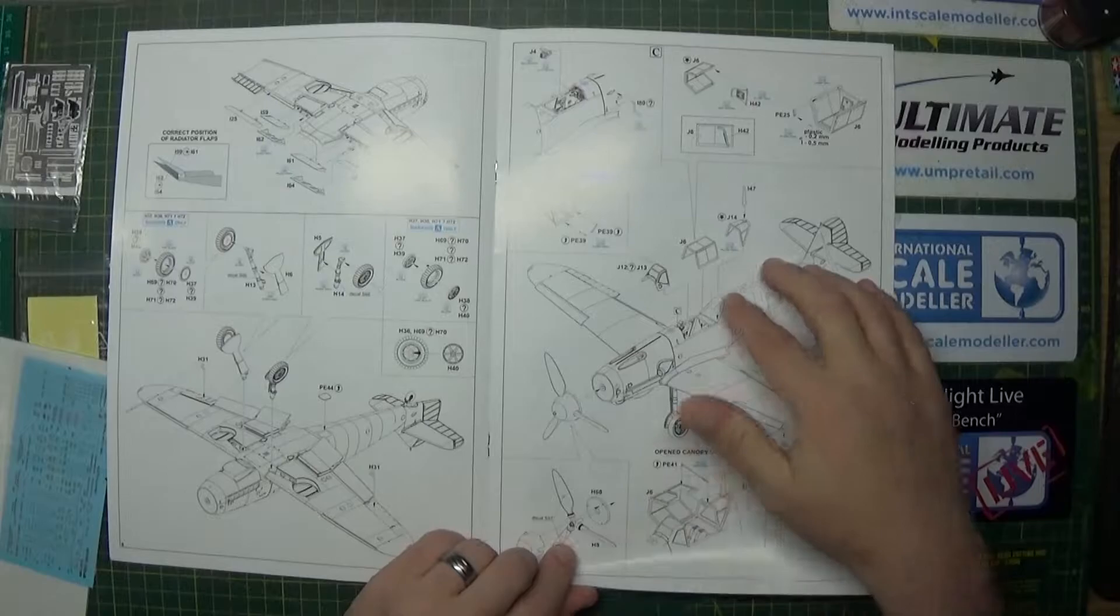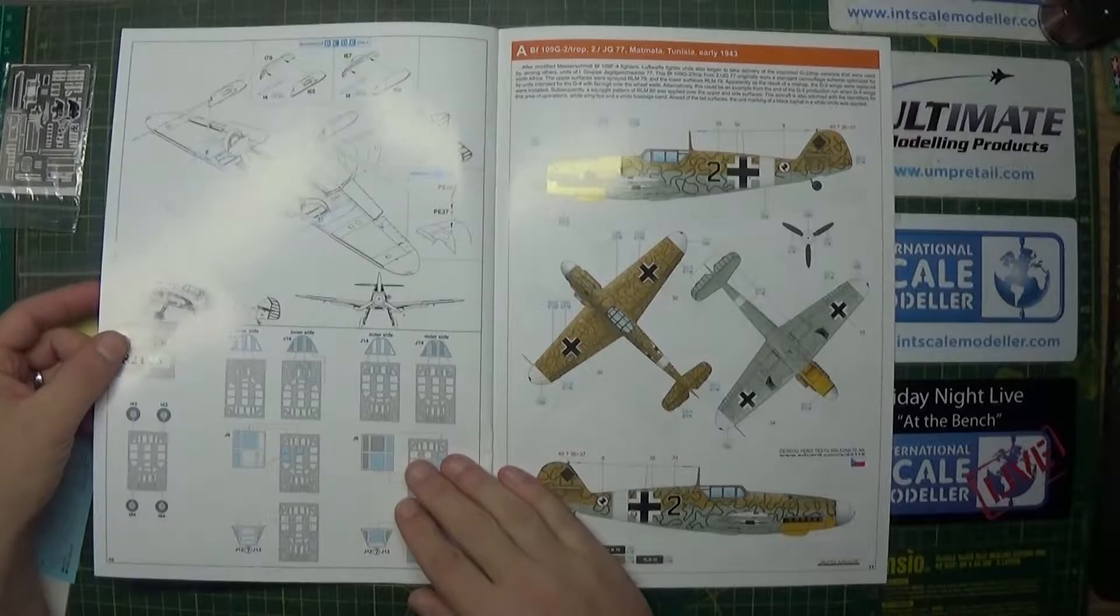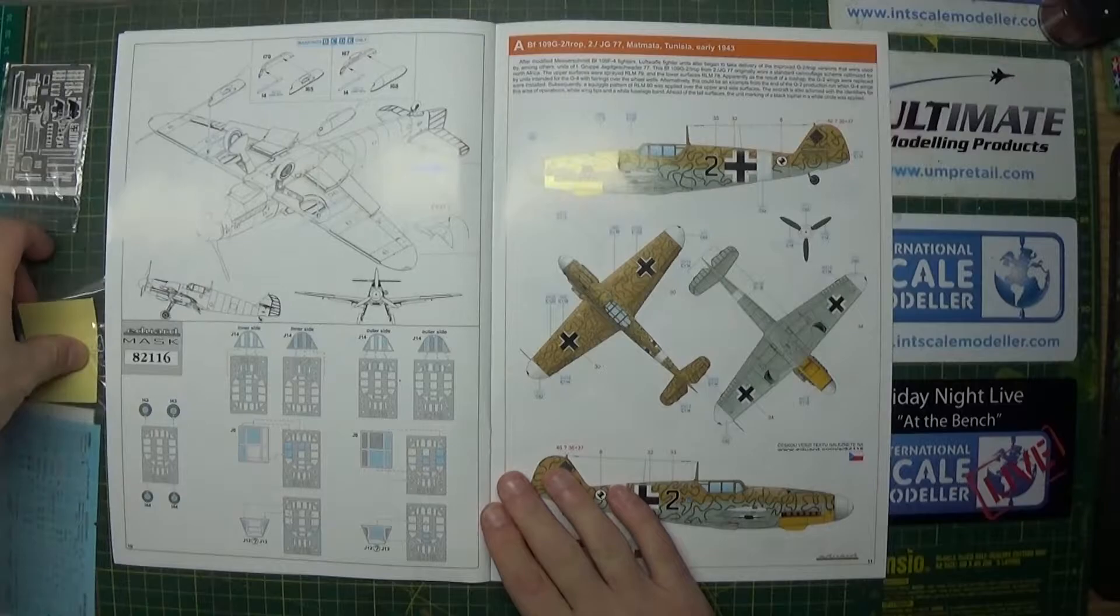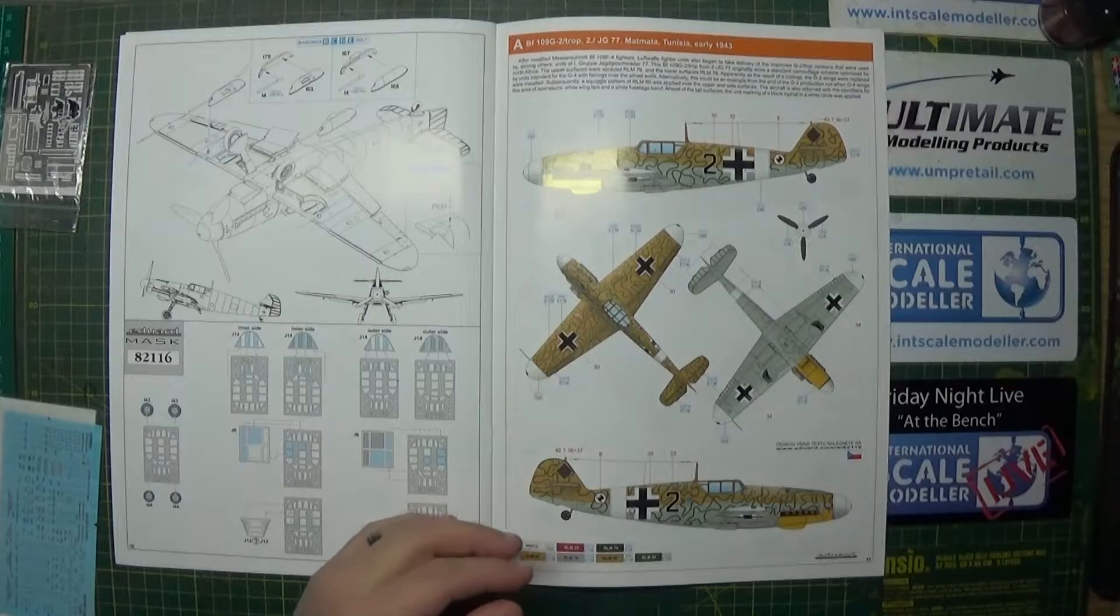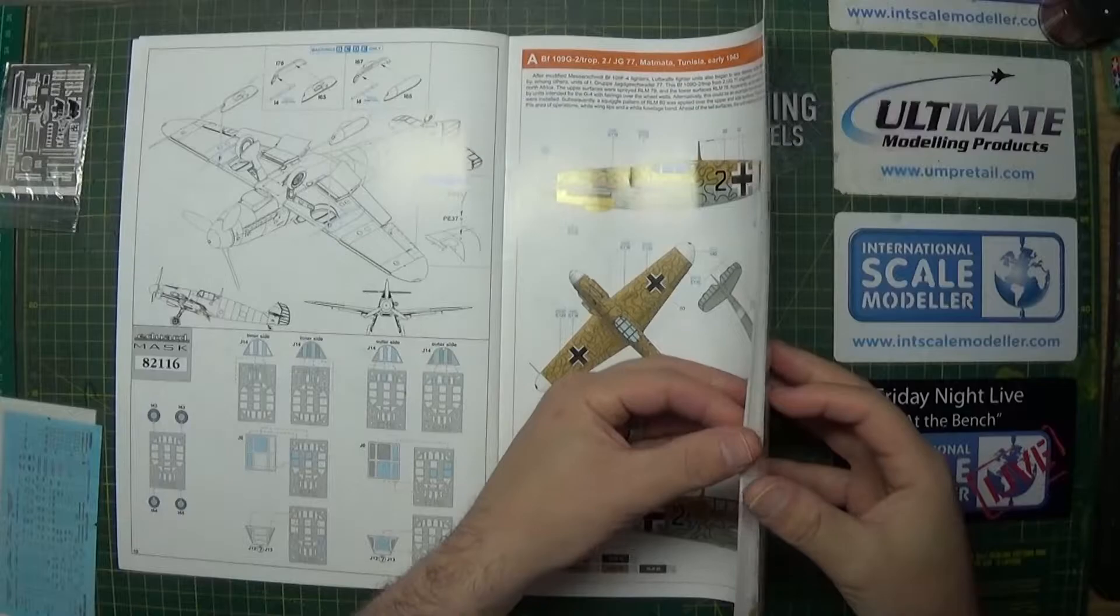And then onto canopies and propeller. We can have either an open canopy or a closed canopy, so decisions, decisions. And then onto just the final touches of the plane. So it looks like we have a mask set to go with this. Never used a mask set before, so don't know how to use that, and we're on to paint schemes.